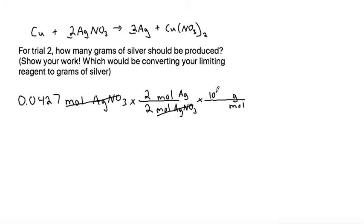So that number goes with the grams and that's one mole. If we use our calculator to convert this out, I get this to be 0.0427 times 2 divided by 2 times 107.87 divided by 1, which gives me 4.607.